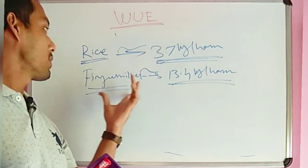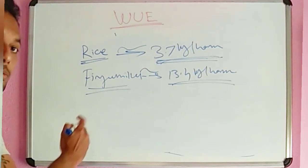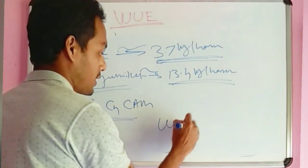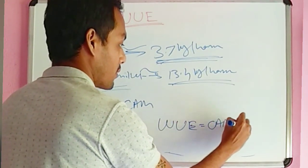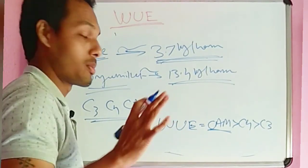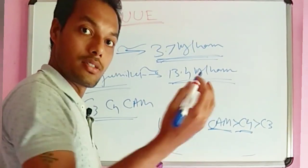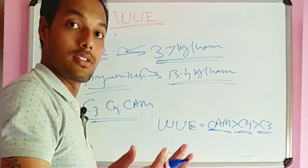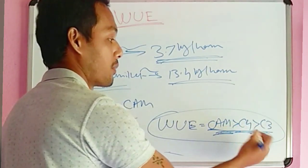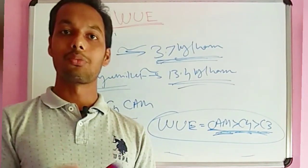In case of photosynthesis pathways, C3, C4, and CAM plants have different water use efficiencies. The order is CAM > C4 > C3. CAM plants close their stomata during daytime and use less water. C4 plants have low photorespiration and high productivity. C3 plants have high photorespiration and use a lot of water. This will come in exams. See you tomorrow, bye bye!